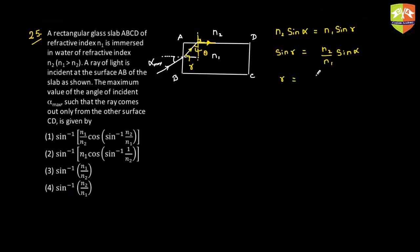Or R is equal to sine inverse N2 by N1 sine of alpha. Fine. So if R is this, the angle of incidence at the surface AD has to be 90 minus R because this is right angle triangle. So theta has to be equal to pi by 2 minus R. Now R is sine inverse of that. So this will become cos inverse of N2 by N1 sine of alpha. So this is theta.